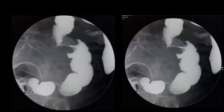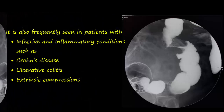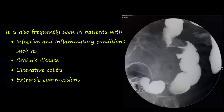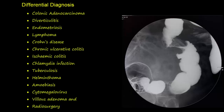An apple core lesion can be caused by a number of reasons, most sinister and most common of which is the malignant neoplasm as mentioned before. But it can also be caused by infective processes or even inflammatory bowel diseases such as Crohn's disease and ulcerative colitis. The sign can also be caused by extrinsic compressing lesions. The differential diagnosis includes: colonic adenocarcinoma, diverticulitis, endometriosis, lymphoma, Crohn's disease, chronic ulcerative colitis, ischemic colitis, tuberculosis, cytomegalovirus, and villous adenoma. These differentials should be kept in mind and correlated with clinical indicators to avoid misdiagnosis.